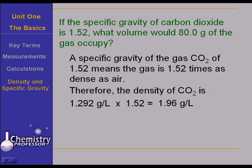Now it's easy to work the problem now that we have figured this out. 80 grams of carbon dioxide times a liter over 1.96 grams tells us that we have, after canceling the units, a volume of 43.8 liters.